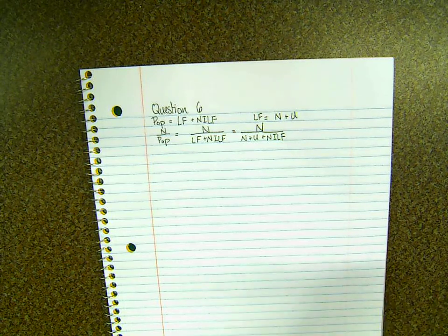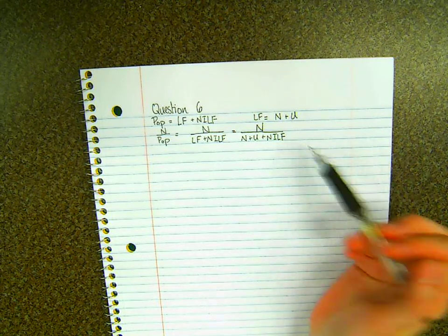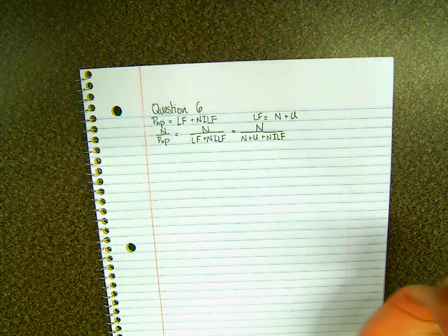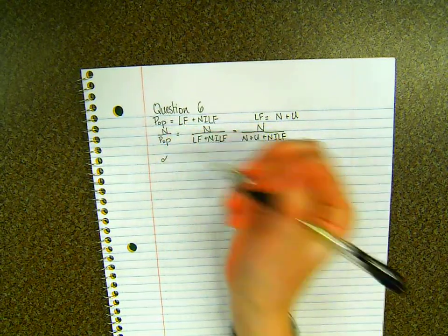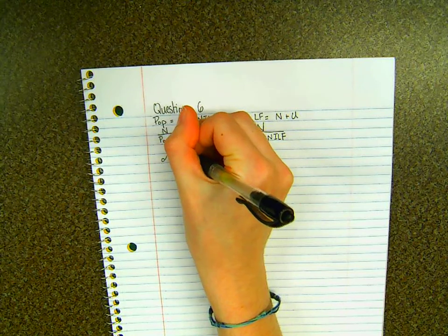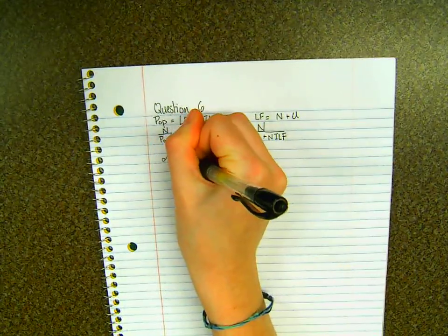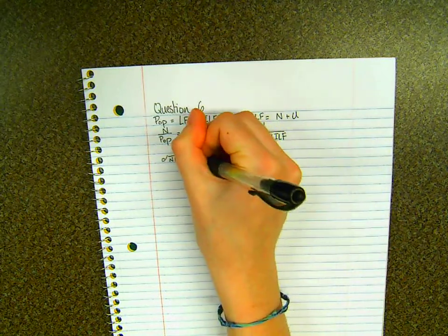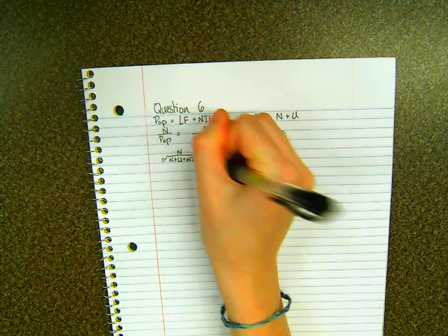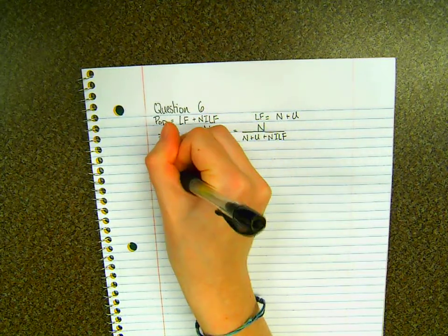So in order to solve that, we're going to find the partial derivative of this with respect to U. So we're going to find the partial derivative of N over N plus U plus those not in the labor force, with respect to U.